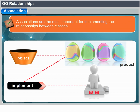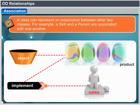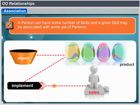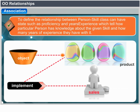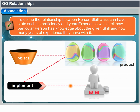Associations are the most generic of relationships between classes. A class may also represent an association between two other classes — for example, a skill and a person are associated. A person can have some number of skills, and a given skill may be associated with some set of persons. To define the relationship, a person-skill class can have state such as proficiency and years of experience, indicating how good a particular person is at a skill.